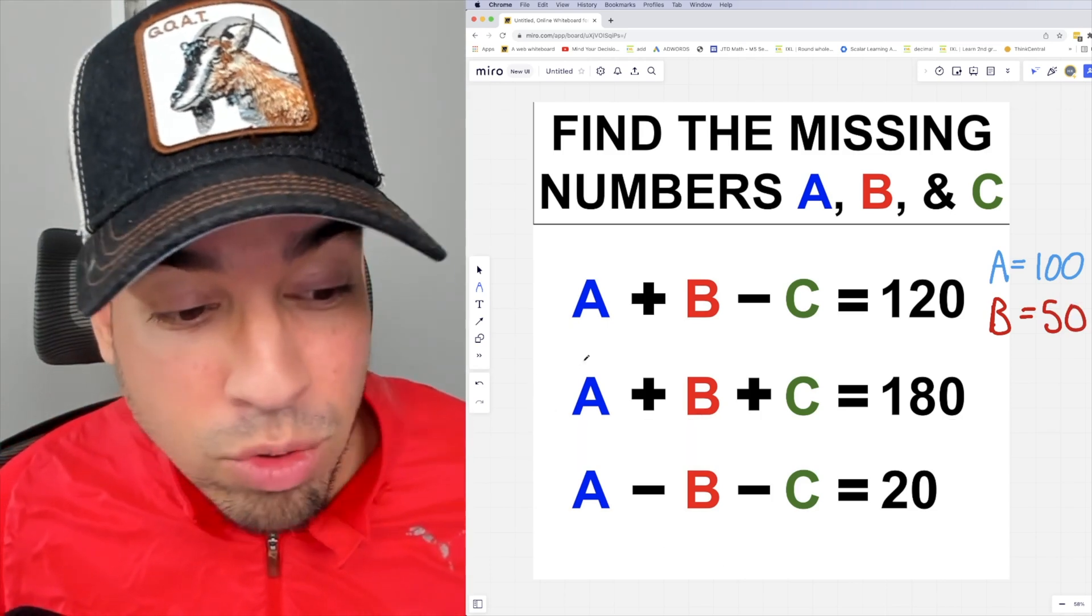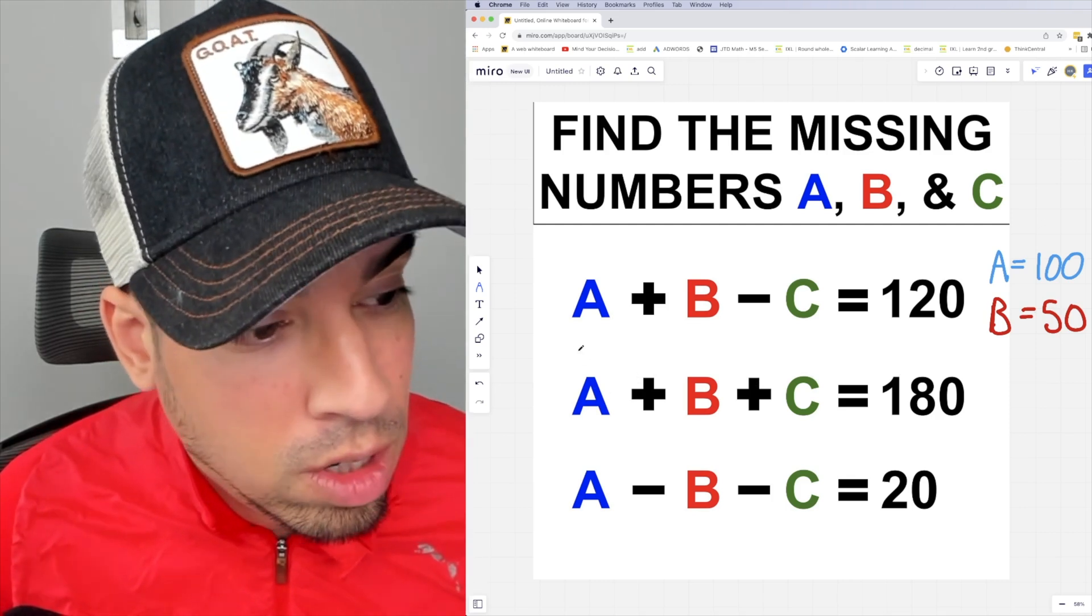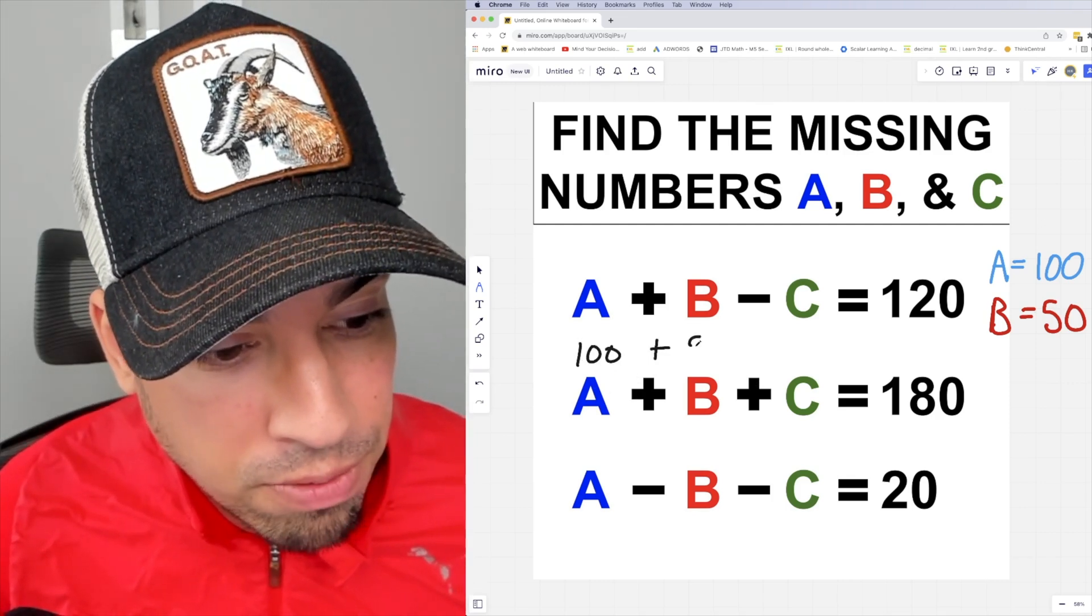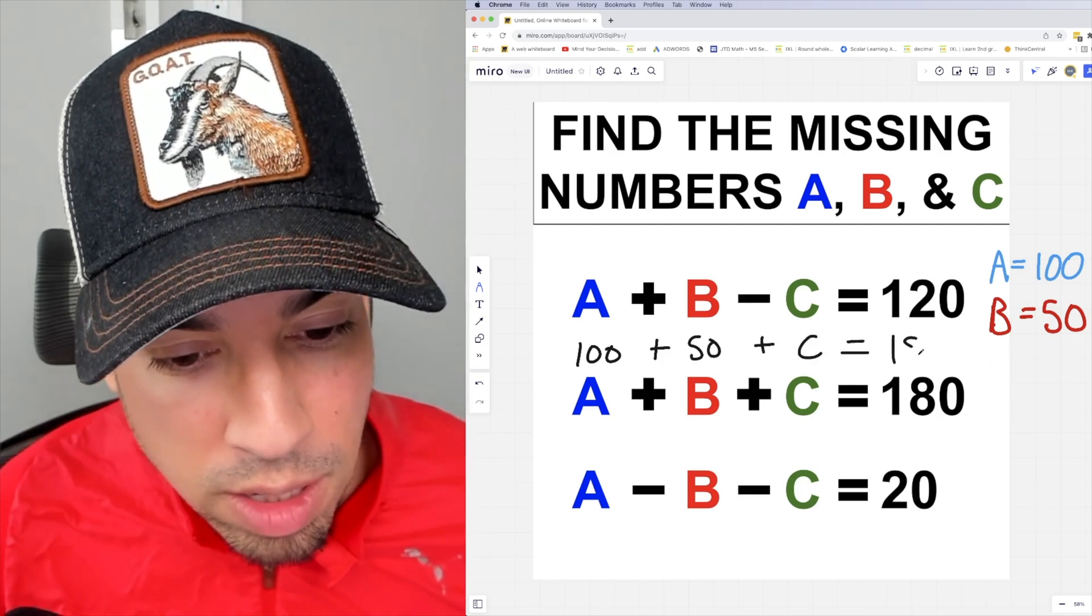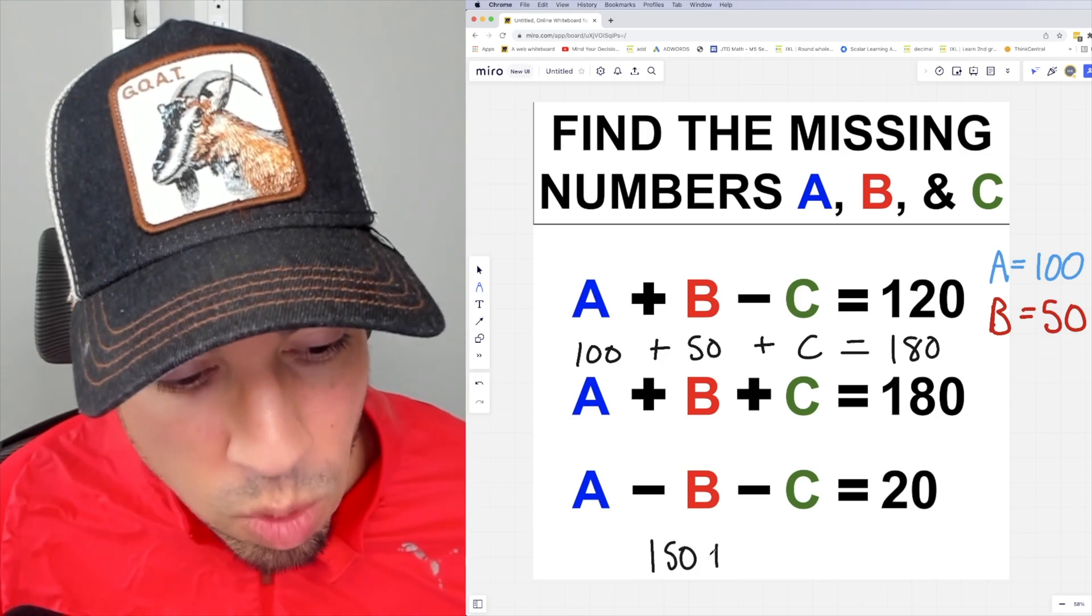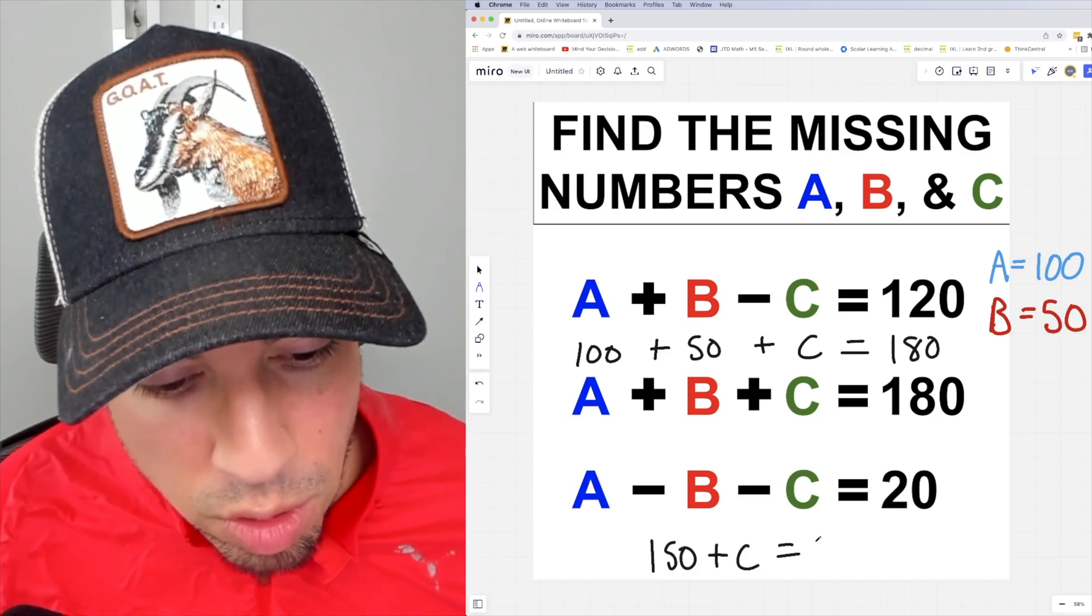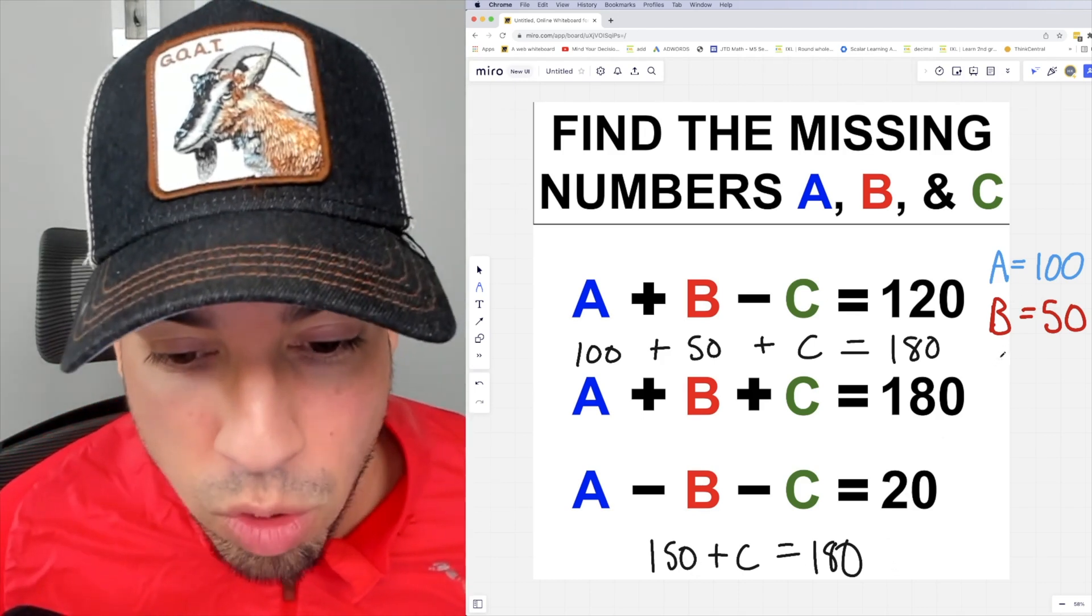Let's just use the straight up addition one. So we have 100 plus 50 plus C equals 180. So since 100 plus 50 is 150, if we say 150 plus C equals 180, what number plus 150 is 180? That is, of course, 30. So C is 30 for the win.